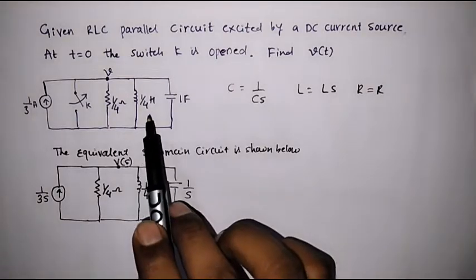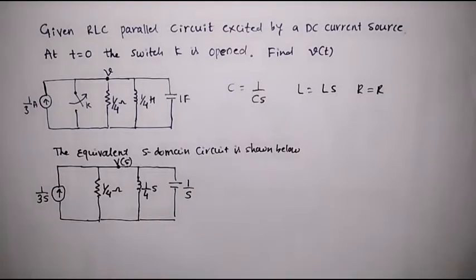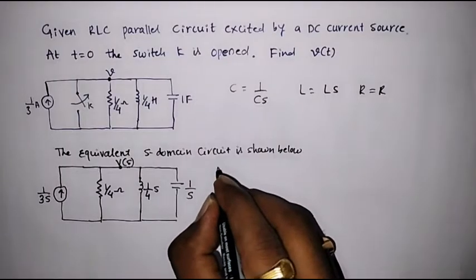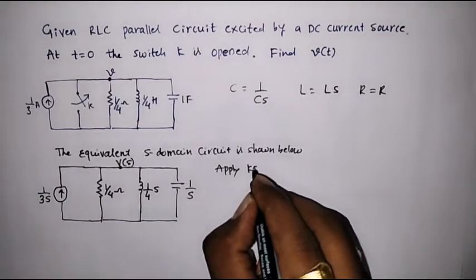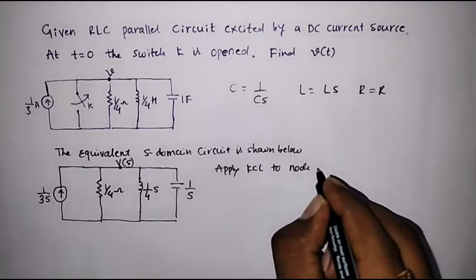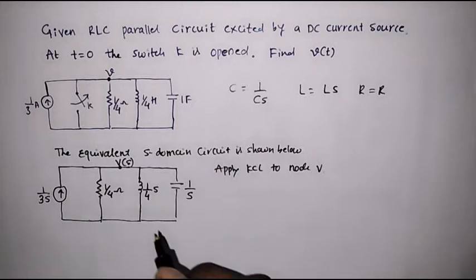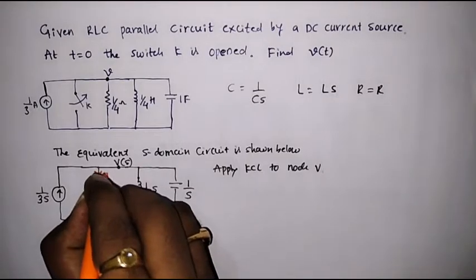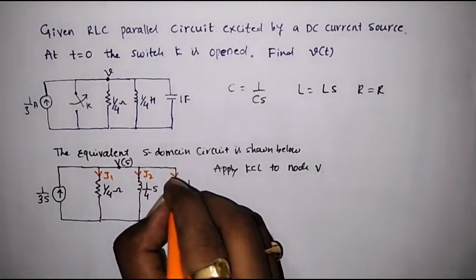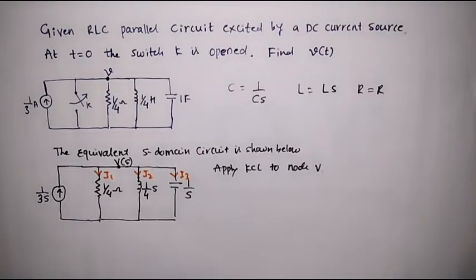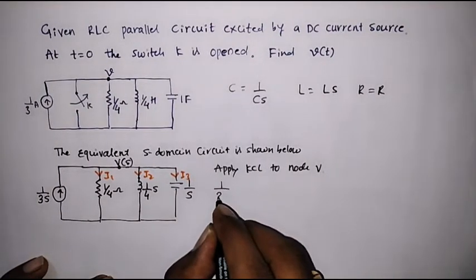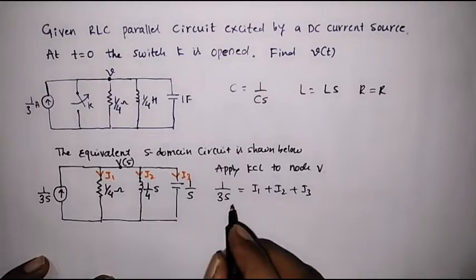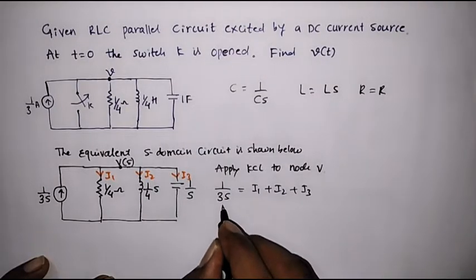We have transformed the time-domain circuit into the S-domain circuit. Now we will apply KCL at this node. Applying KCL to node V, we will assume that the current through the resistor branch is I1, the inductor branch is I2, and the capacitor branch is I3. Therefore, incoming current equals outgoing current: 1 upon 3S equals I1 plus I2 plus I3.